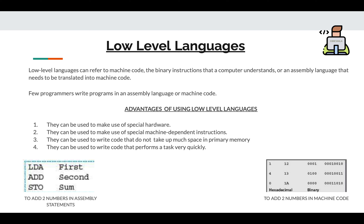Few programmers write programs in assembly language. Those who do, do so for the following reasons: to make use of special hardware, to make use of special machine-dependent instructions, to write code that doesn't take much space in primary memory, and to write code that performs a task very quickly.